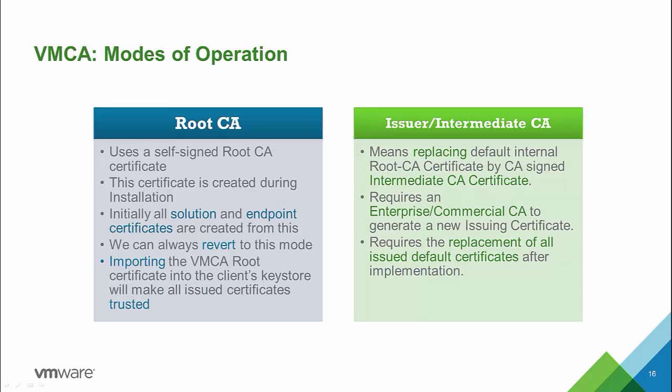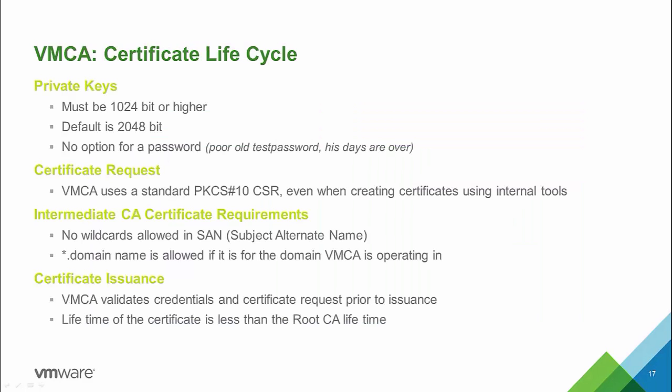We can always revert to root CA mode with the certificate management tool or manually. The difference in intermediate CA mode is that the root CA certificate created during installation is replaced by a trusted intermediate CA certificate. This requires an enterprise or commercial certificate authority to generate a new issuing certificate. Afterwards, you will need to replace all issued default certificates. Private keys must be 1024 bit or higher, with a default of 2048 bit. There is no option to provide a password. Certificate signing requests use the PKCS 10 standard, even internally.